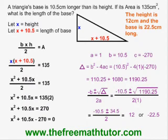The height is 12 centimeters. The base is 22.5 centimeters long. Notice that the answer for the base, 22.5, has the same value but the opposite sign of the negative answer I threw away. This will always happen. This is how we use the quadratic formula to solve a geometry problem.